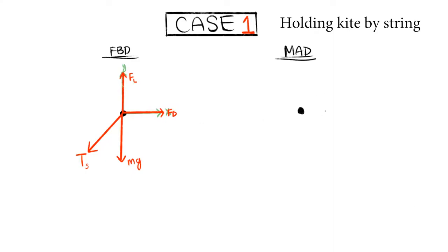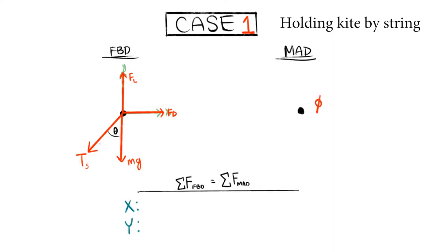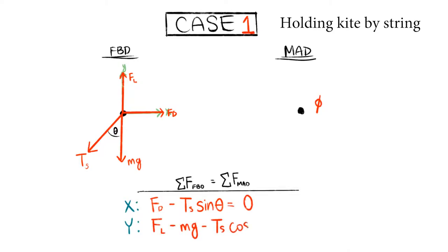For the MAD, the kite does not move, so there are no forces in the MAD. When we sum up the forces in the x direction, we get the drag force minus the tension sine theta equaling zero. When we sum up the forces in the y direction, we get the lift force minus the weight mg minus tension cos theta equaling zero. This demonstrates that the kite will stay in place.